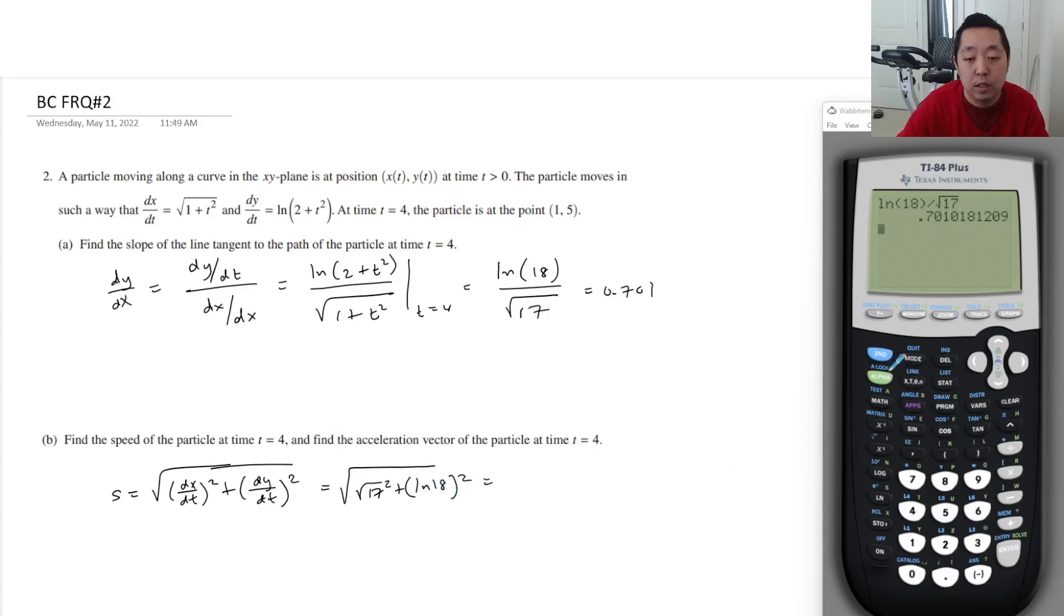So we just do square root of—that's just going to be 17 plus ln of 18, all of that squared, and that would give me 5.035. No units, okay.